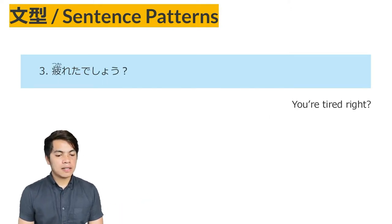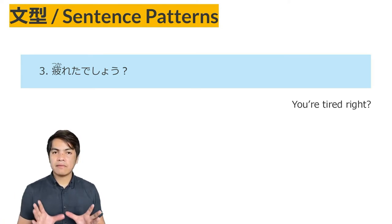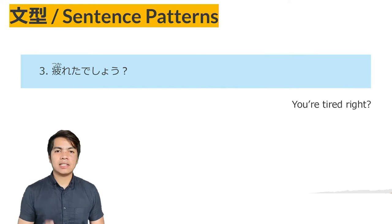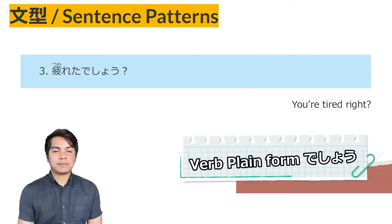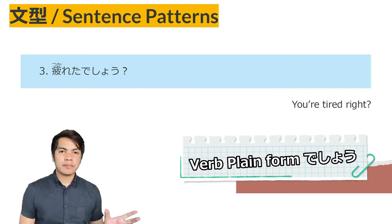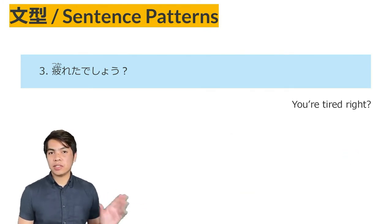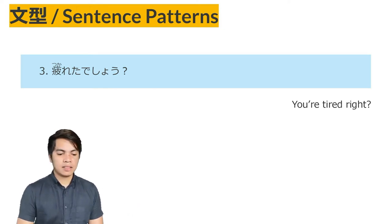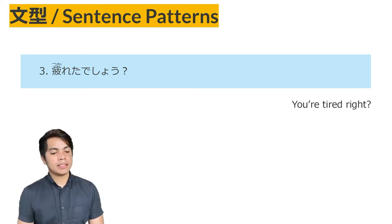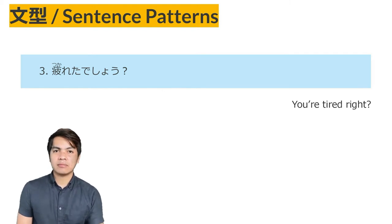Sentence Pattern No. 3. The pattern used in this sentence is verb plain form desho, with a rising intonation. This is used when asking agreement or confirmation from someone. So verb plain desho, or the i-adjective desho, na-adjective desho, and noun desho. The desho uses rising intonation. In English we can translate this as 'You're tired, right?' So we want to ask agreement or confirmation from someone — like asking 'right?'